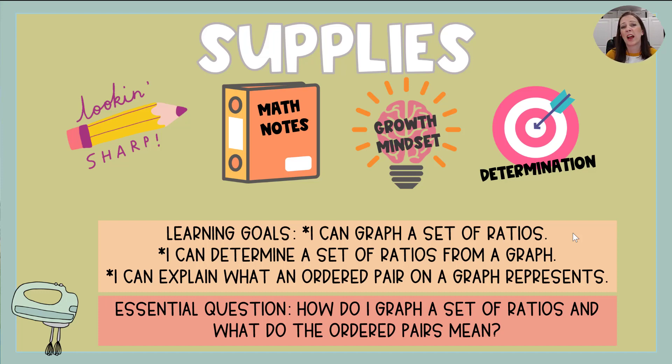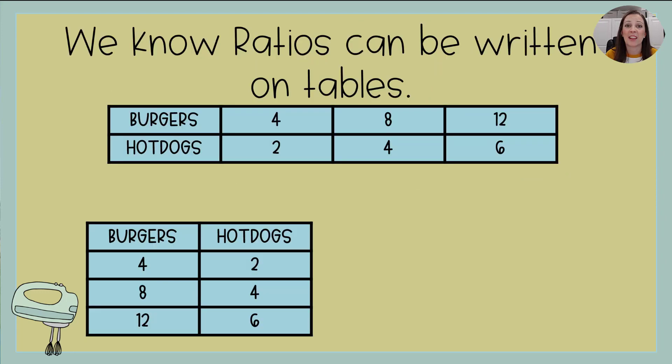The first one is I can graph a set of ratios. The second, I can determine a set of ratios from a graph. And then last but not least, I can explain what an ordered pair on a graph represents. So we have a lot to do today. Let's get started.